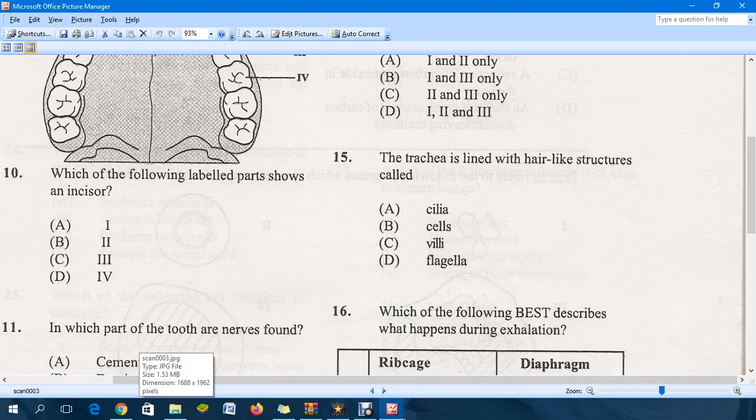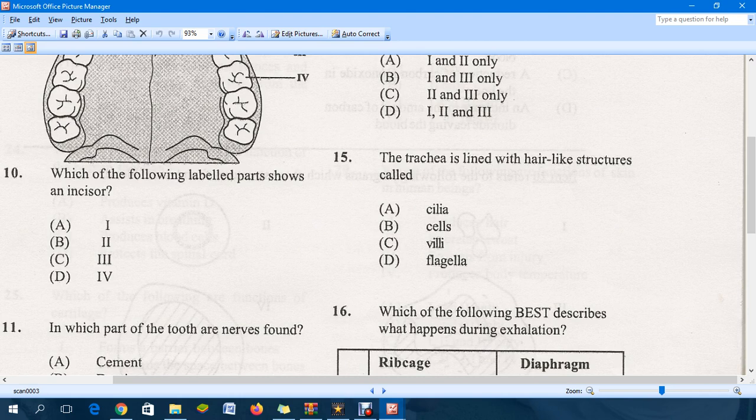The trachea is lined with hair-like structures called, and the answer for that is definitely A, and that is the cilia.